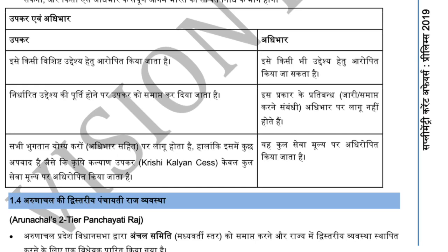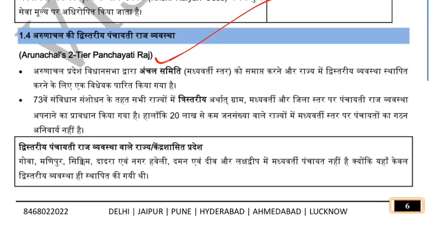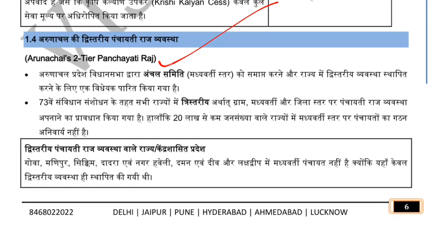Next, we talk about Arunachal Pradesh's two-tier Panchayati Raj system. The Arunachal Pradesh Legislative Assembly passed a bill to abolish the Anchal Samiti and establish a two-tier system in the state. Under the 73rd Constitutional Amendment, all states are required to adopt a three-tier system — gram, intermediate, and district level panchayats. However, states with a population of less than 20 lakh are not required to constitute panchayats at the intermediate level. States in this category include Goa, Manipur, Sikkim, Dadra & Nagar Haveli, Daman & Diu, Lakshadweep — they have a two-tier Panchayati Raj system.